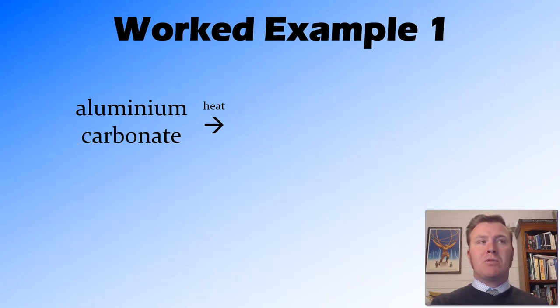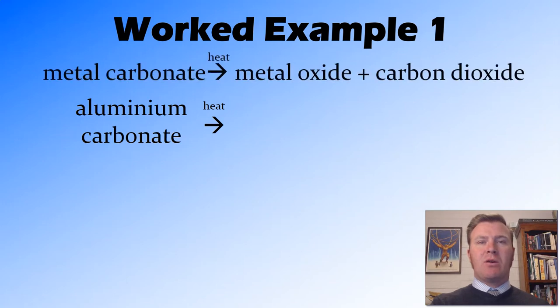Now let's work through an example together. So here we've got aluminum carbonate in the presence of heat. So the first thing I'm realizing is that this is going to be a thermal decomposition of carbonate equation. So I think back to my general equation that a metal carbonate reacts to form metal oxide and carbon dioxide. So this is good because it gives us half of the products already. We know that carbon dioxide is going to be produced.